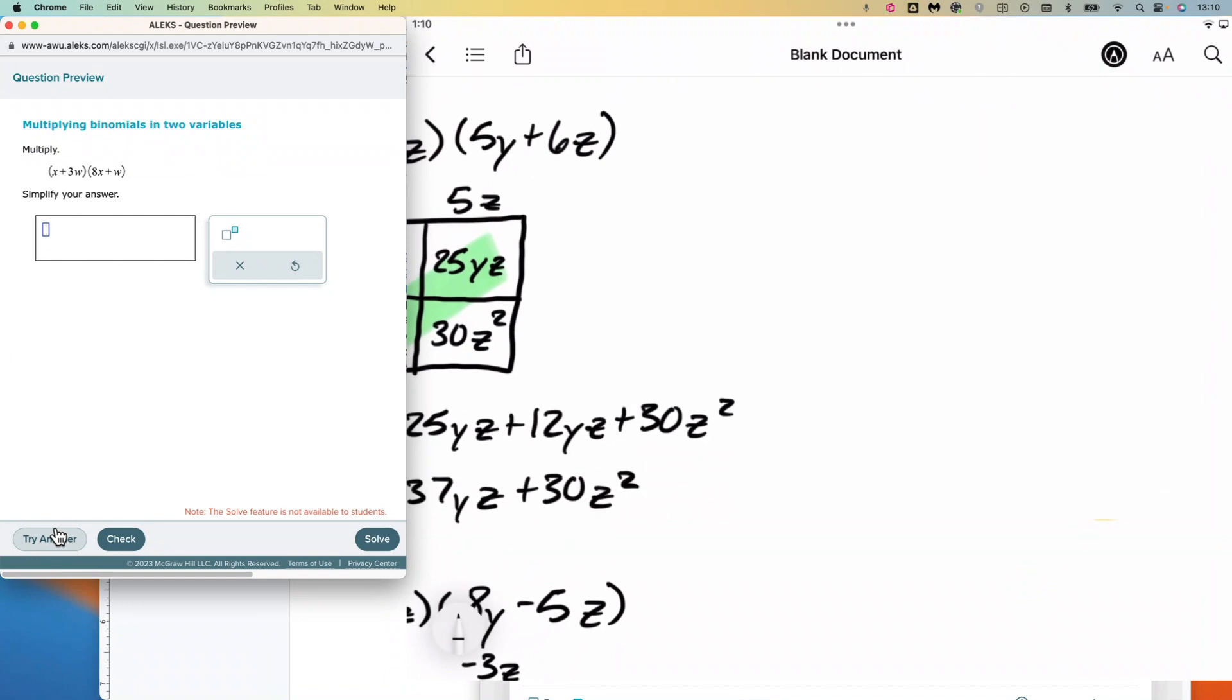We have x plus 3w and 8x plus w. So we'll draw in our box again. We've got x plus 3w and 8x plus w.